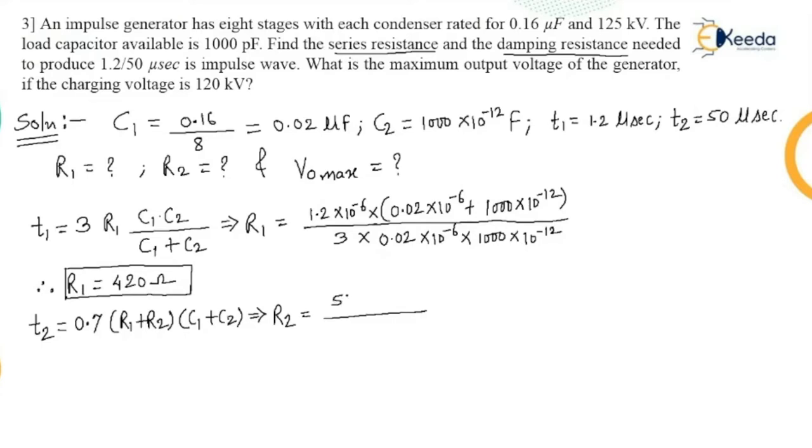So what I do I just adjust these values. So T2 is 50 microsecond. So I just write it as 50 into 10 to the power minus 6 divided by 0.7 multiplied by C1 plus C2.